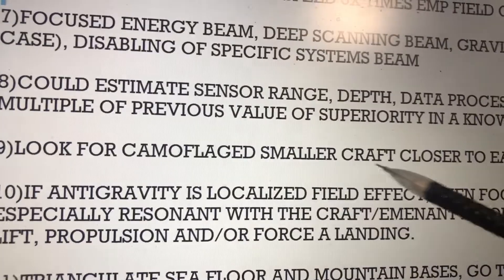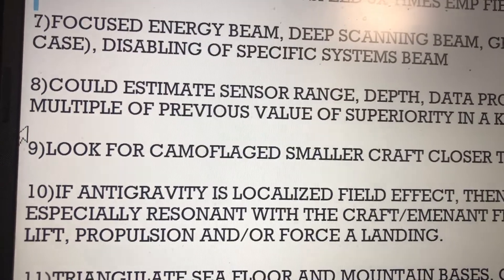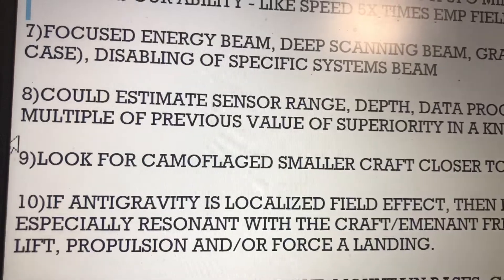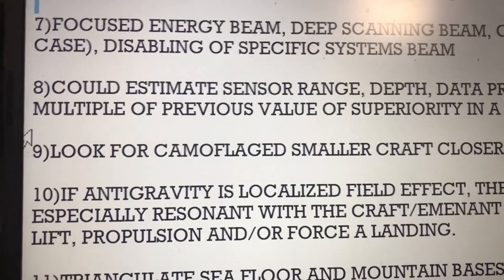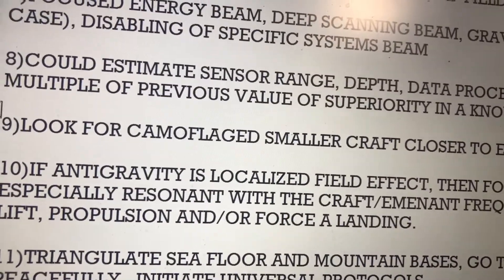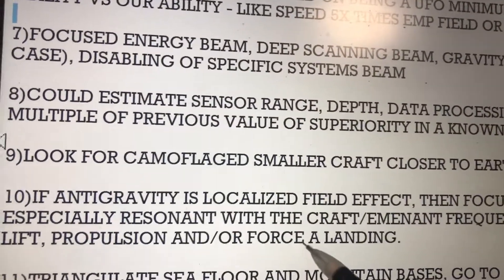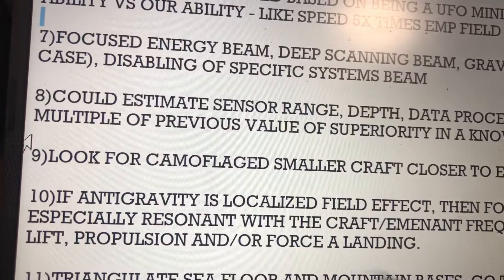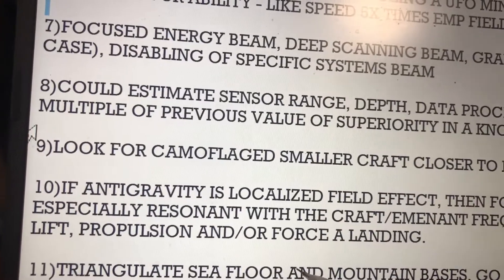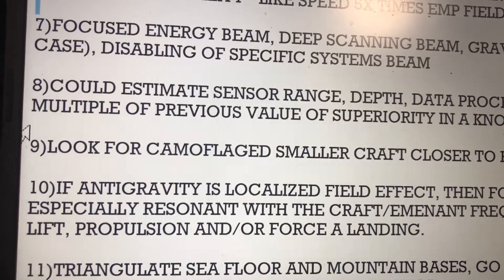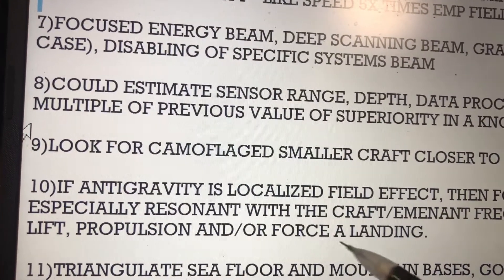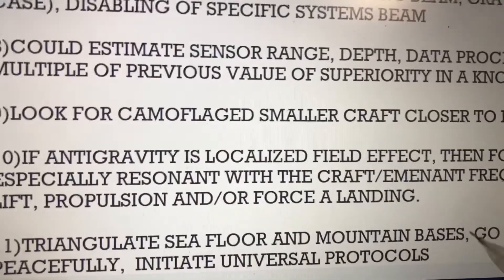We could look for camouflaged smaller craft closer to the Earth's surface. Using the fractal UFO model, there's a mathematical formula for craft presence as they get closer to the surface. If gravity is localized in a field effect, then focused frequencies — especially resonant with the craft or the frequency it's emitting — could disrupt lift, propulsion, or force a landing.